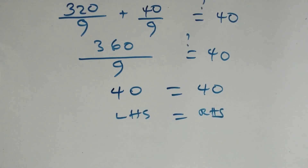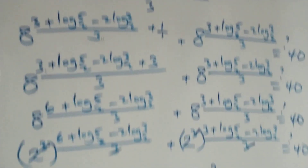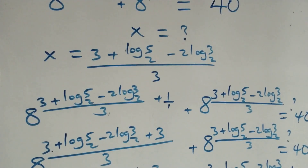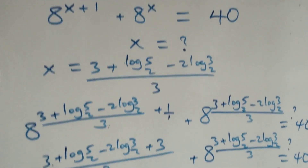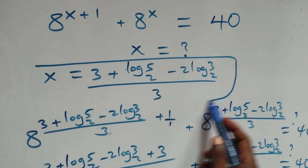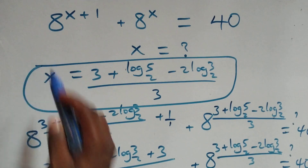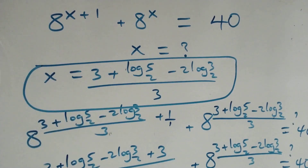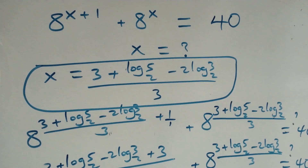Therefore, we conclude that x equals (3 plus log₂5 minus 2 log₂3) all over 3 satisfies the given problem. Thank you for watching — don't forget to subscribe for more videos, turn on the notification bell, share this video, give a thumbs up, and put your comments. See you next class, bye for now.